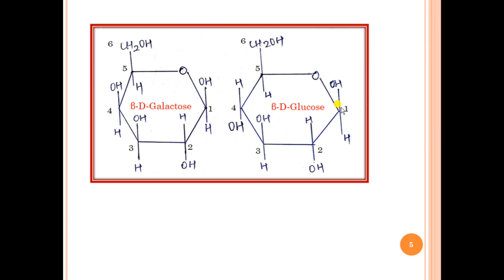Depending upon the spatial arrangement of atoms around this anomeric carbon atom, you can get two types of molecules: the alpha anomer and the beta anomer. If the OH group is present upwards — above the plane of the ring — then it is called a beta anomer. And if the OH group is present below the plane of the ring, it is called an alpha anomer. So now I hope you all have understood what this beta means.